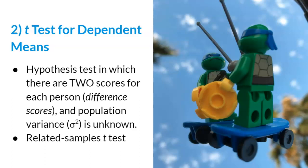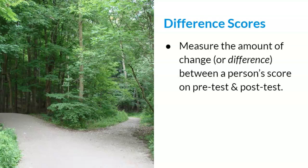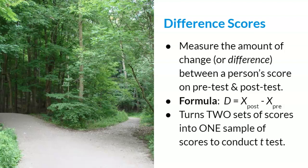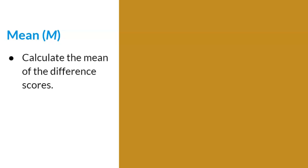Before we review the hypothesis test, there are two important concepts about this t-test that need to be reviewed first. Since the sample is being tested twice, the researcher is interested in the difference between the first score and the second score. Difference scores measure the amount of change between the pre-test and the post-test score. To measure the difference, we subtract the post-test score from the pre-test score. Like two paths that lead into one, difference scores turn two sets of scores into one sample to conduct the t-test.